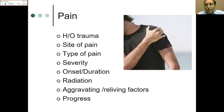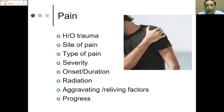If the pain is more anterior and coming down toward the front of the arm to the elbow, we are looking possibly at biceps pathology such as bicipital tendinitis. If the pain is at the top of the shoulder, that is the AC joint area, suggesting the pain is coming from the acromioclavicular joint, and further history and examination will go in that direction.